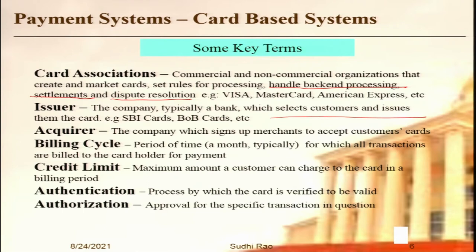The billing cycle is a period of time — typically a month — for which all transactions are billed to the card holder. In my case, all purchases from the first to the thirtieth of the month appear in one statement. Every month I get a statement of all my purchases, the payments I have made, any declined sales refunded back to me. I get a list of all transactions for the month, and typically the statement comes on the fourth or fifth of the following month.